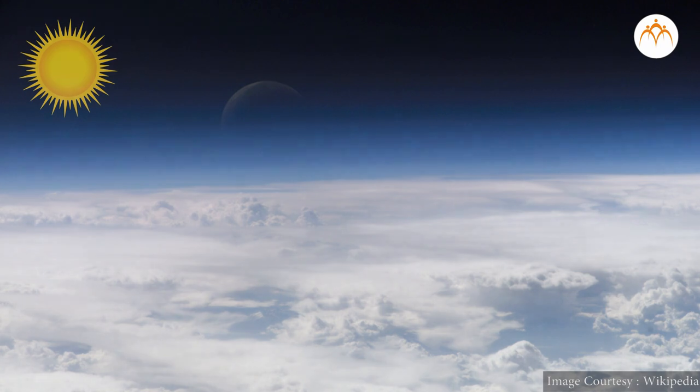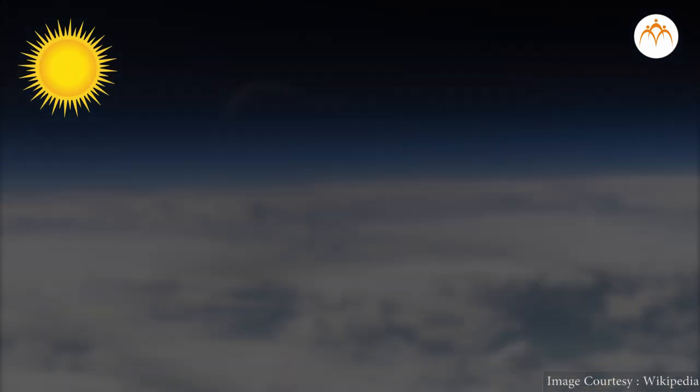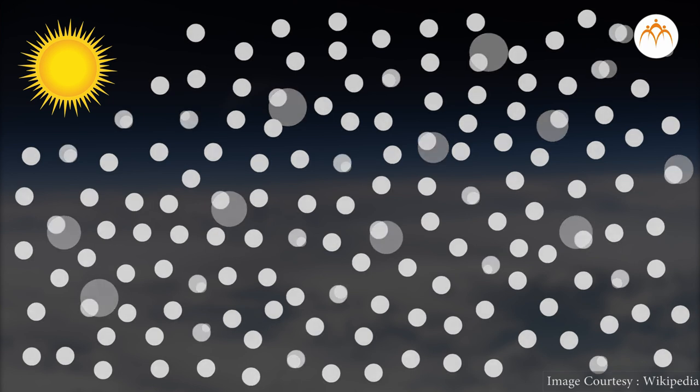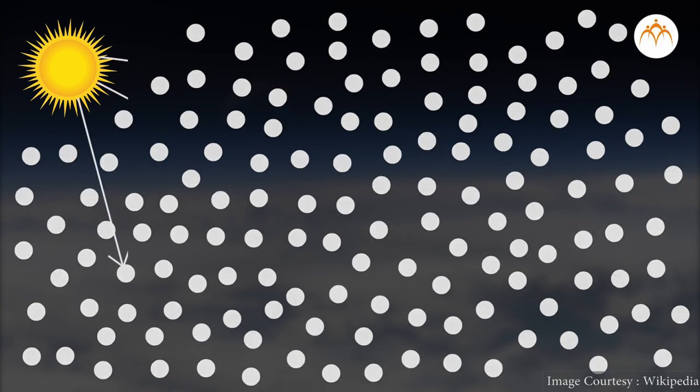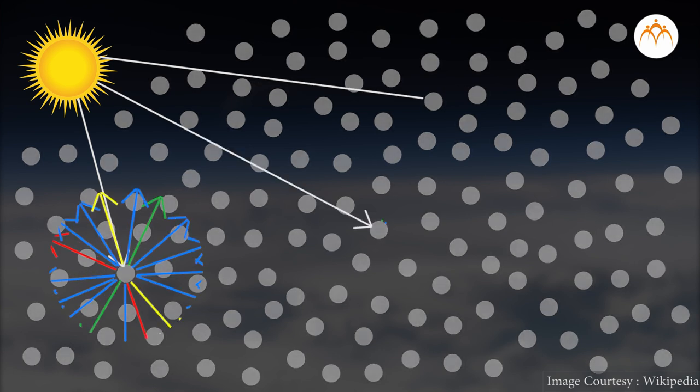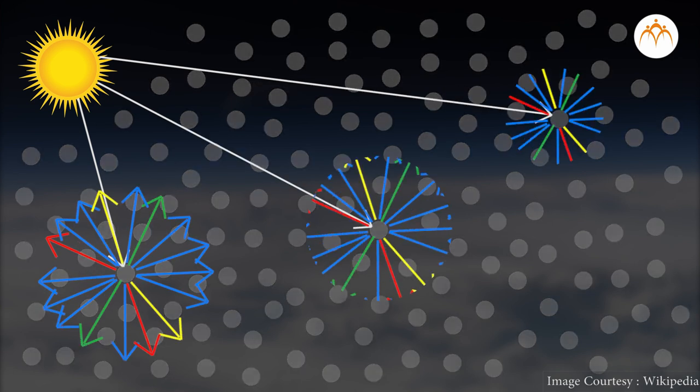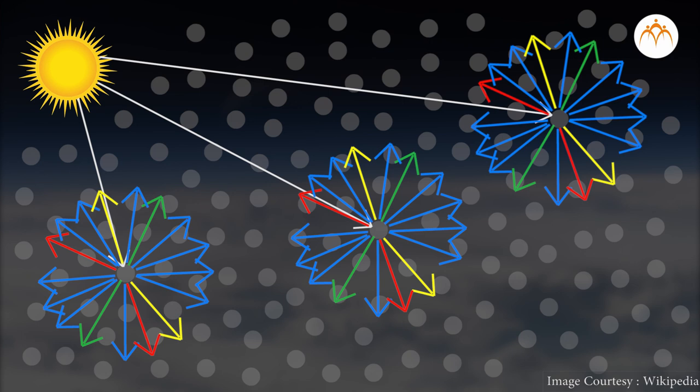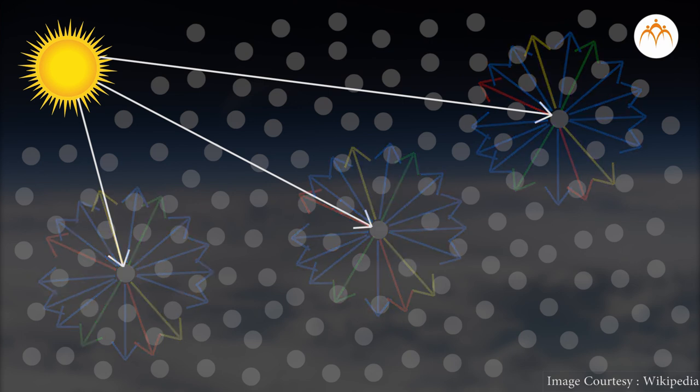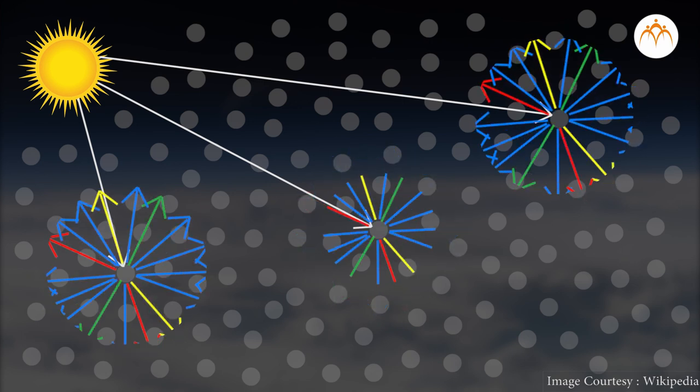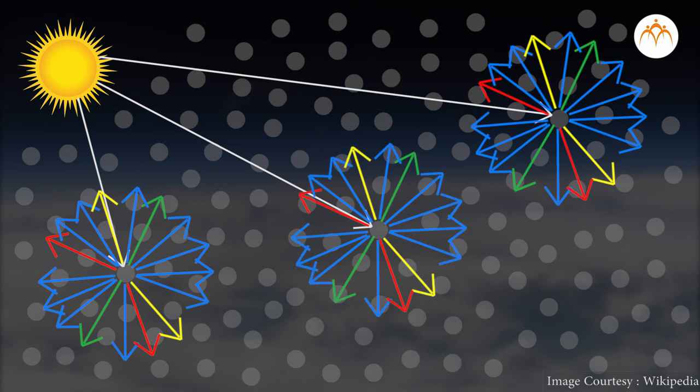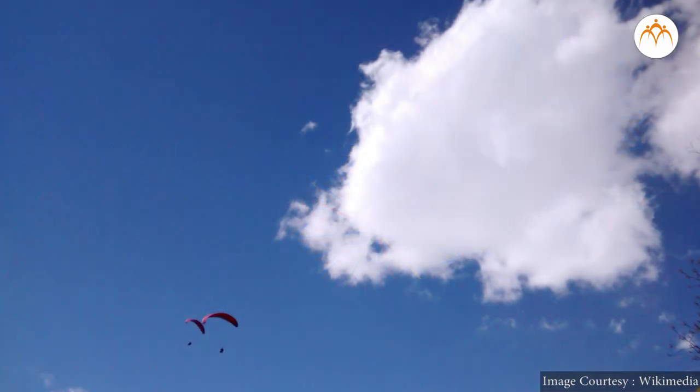How light waves get scattered depends strongly on the size of the particle compared with the wavelength of the light. Particles that are small compared with the light wavelength scatter blue light more strongly than red light. Because of this, the tiny gas molecules that make up our earth's atmosphere scatter blue portion of the sunlight in all directions, creating an effect that we see as a blue sky.